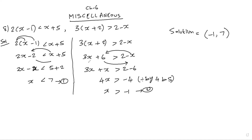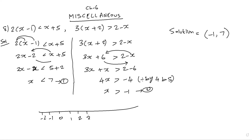Greater than or equal to and less than or equal to use closed brackets, while strict inequalities use open brackets. On the number line: minus 2, minus 1, 0, 1, 2, 3, 4, 5, 6, 7, going to plus infinity. The first condition x less than 7, and the second x greater than minus 1.